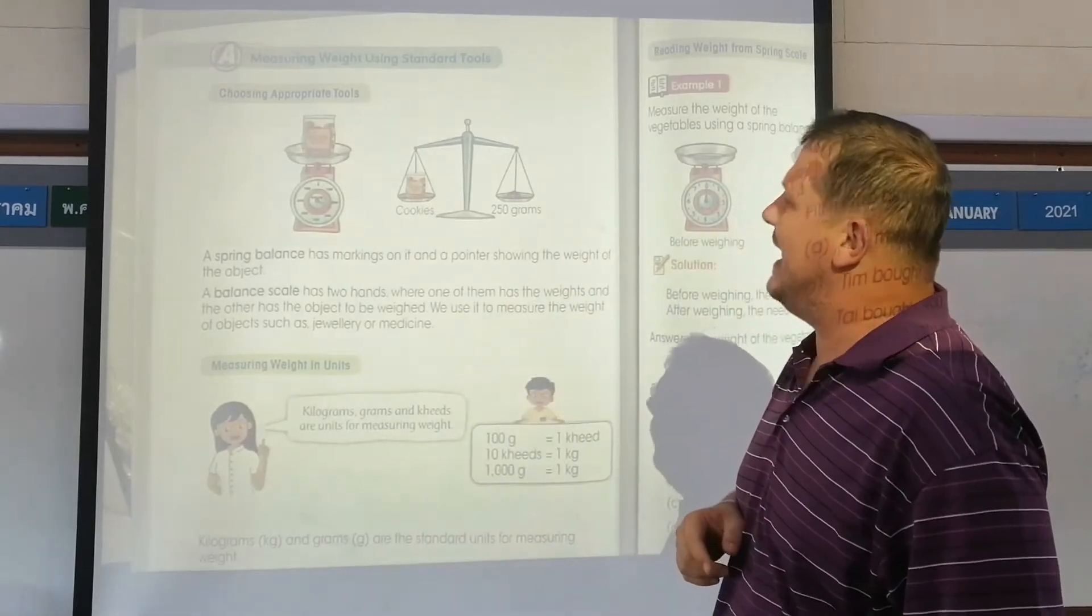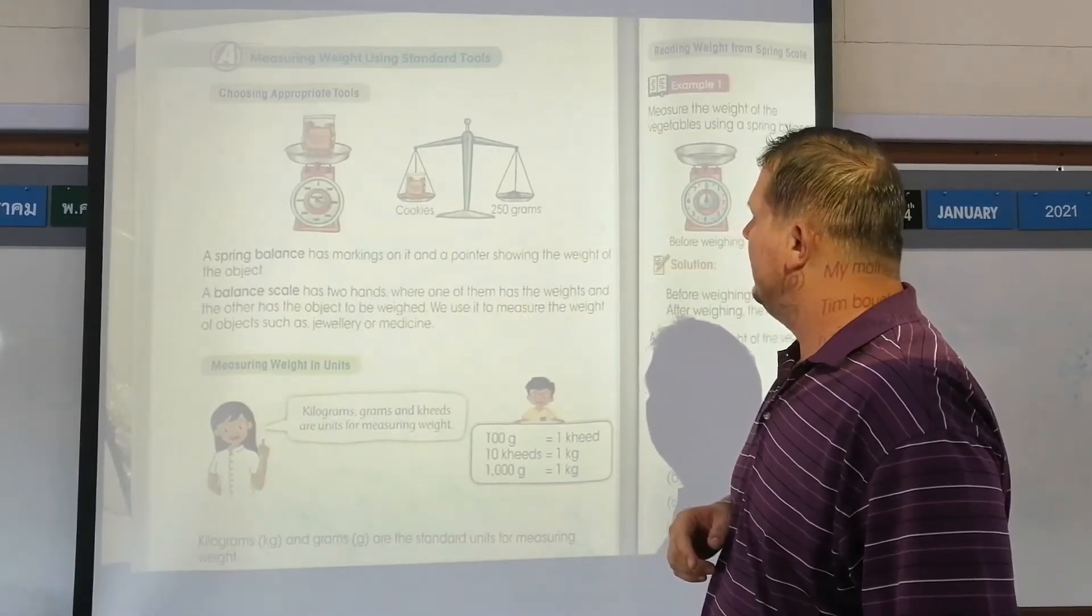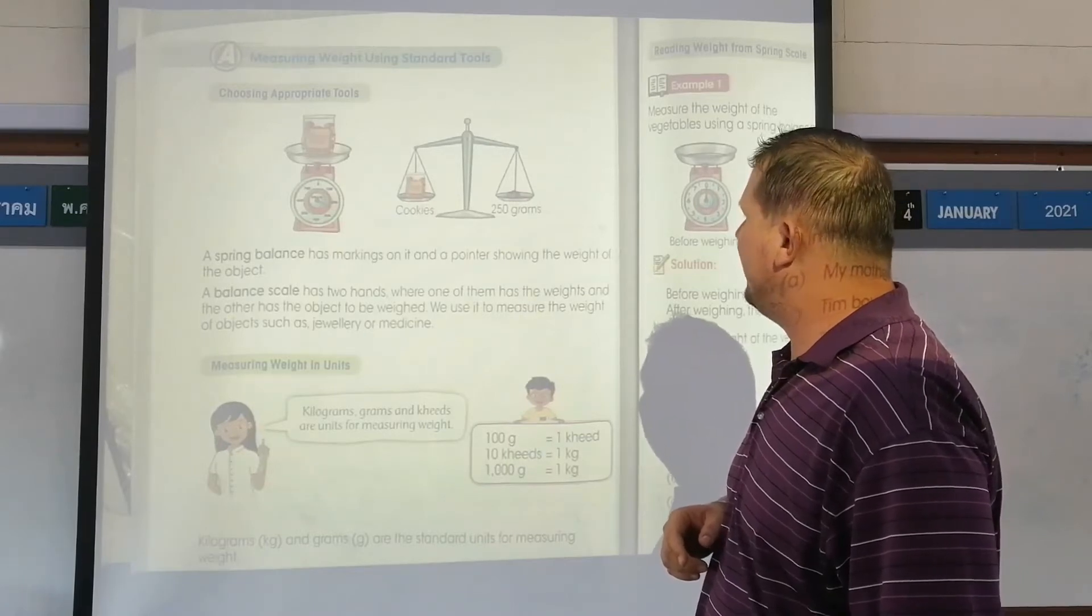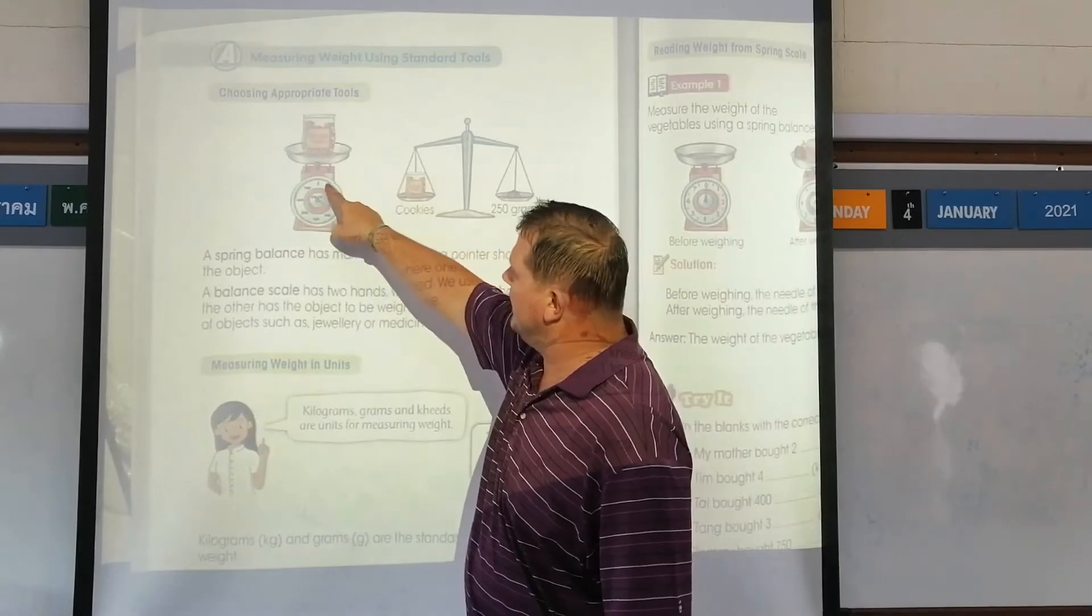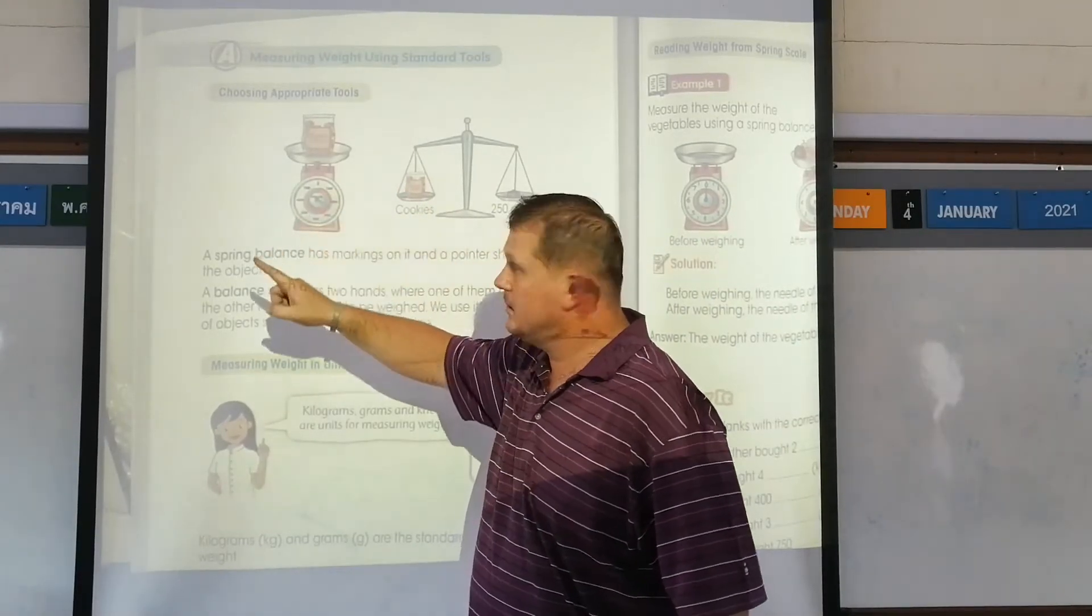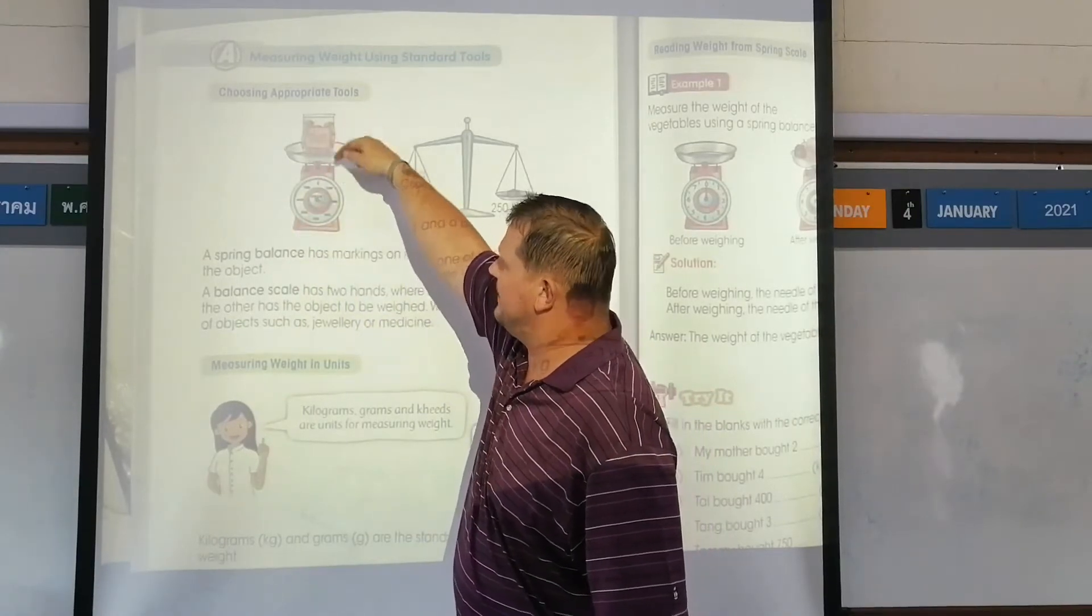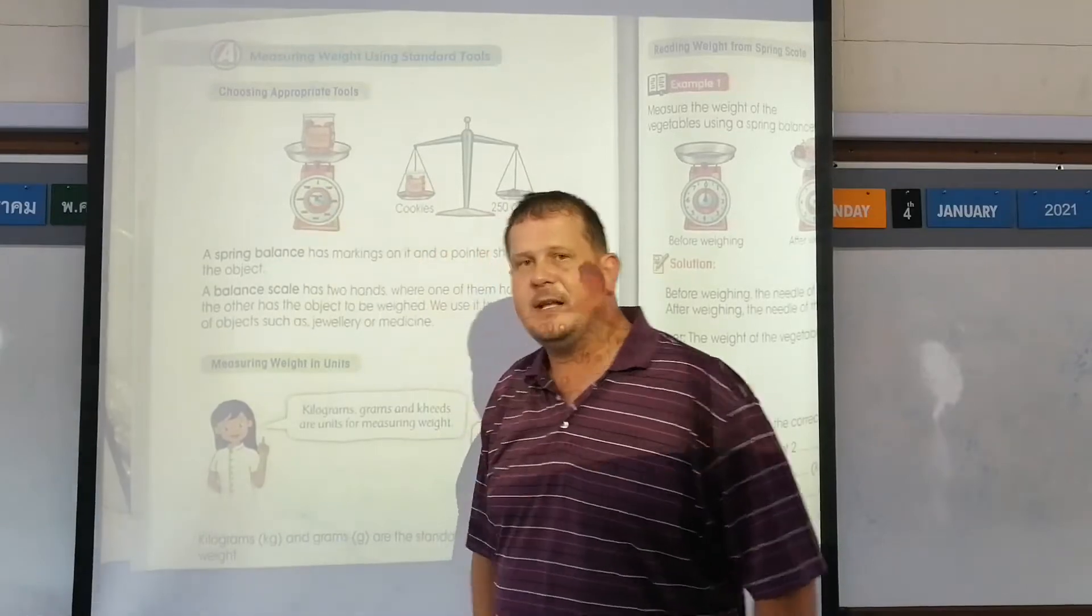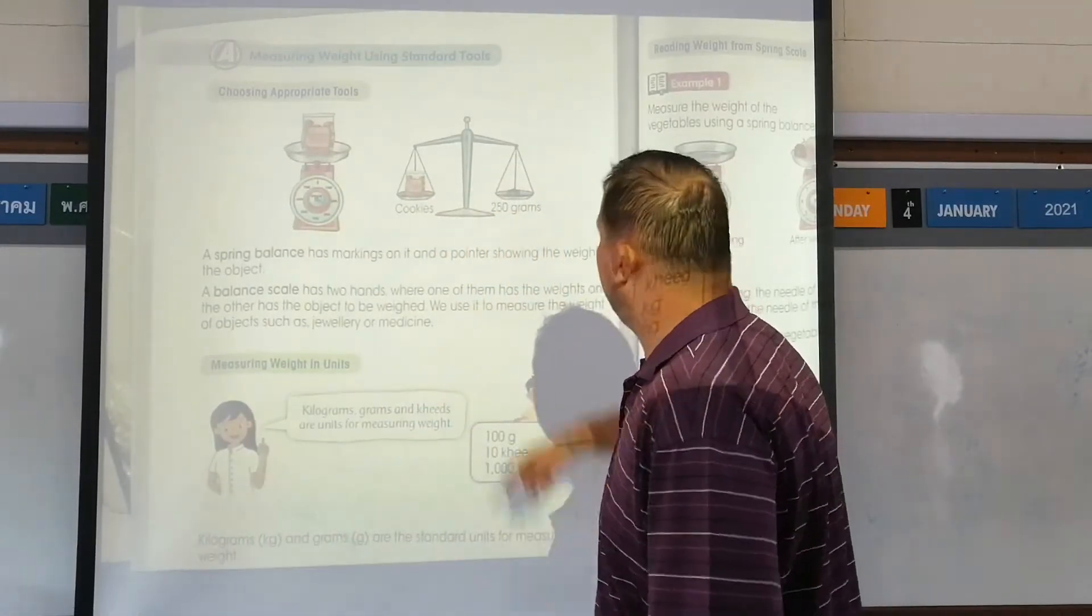A string balance has markings on it and a pointer showing the weight of the object. There is the weight, then there will be a needle. And as you place something on top, the needle will move, and obviously where the needle stops, that's how heavy the object is.